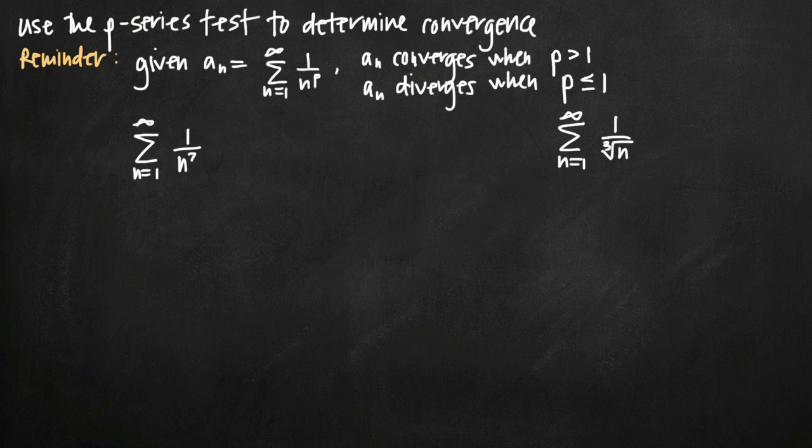Today we're going to be talking about the p-series test for convergence. In this particular problem, we're going to use the p-series test to determine whether or not the series 1 over n to the 7th and the series 1 over the 3rd root of n are convergent.